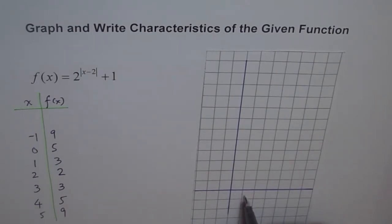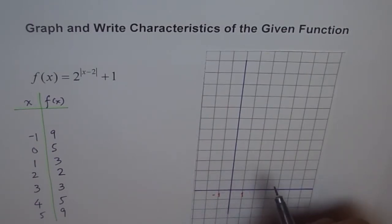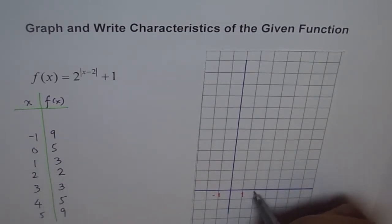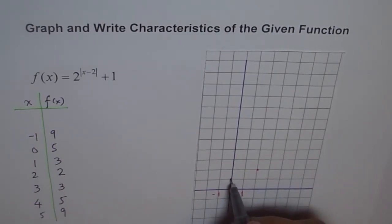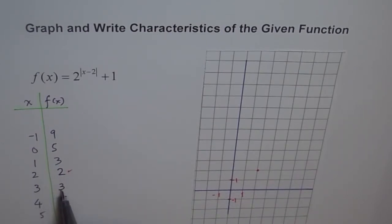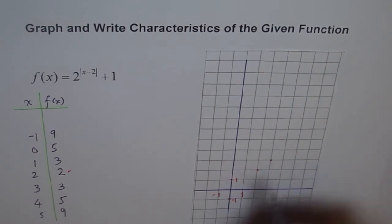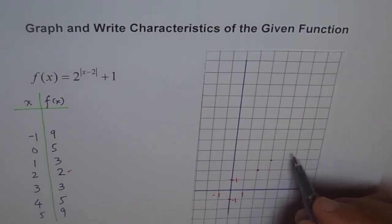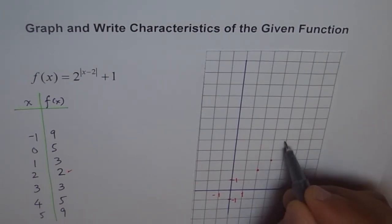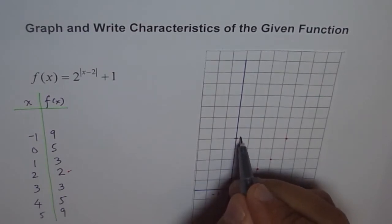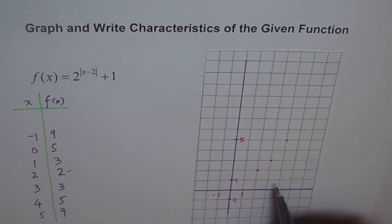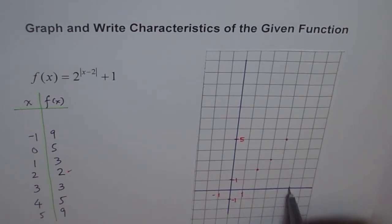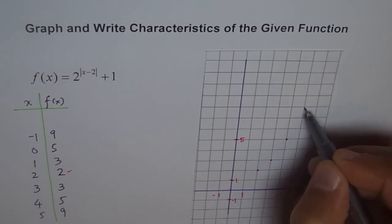Let's plot these values. At x equals 2, the value is 2. At x equals 3, the value is 3. At x equals 4, the value is 5. At x equals 5, the value is 9.